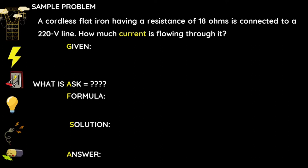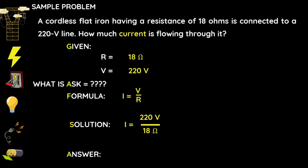For this word problem, our given are: resistance = 18 ohms, voltage = 220 volts. The formula for computing current is: current equals voltage divided by resistance. For our solution, we replace the formula with the given: 220 volts divided by 18 ohms equals 12.2 amperes. Since we are computing for the current, the unit for our answer is amperes.